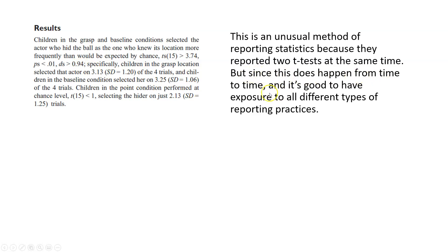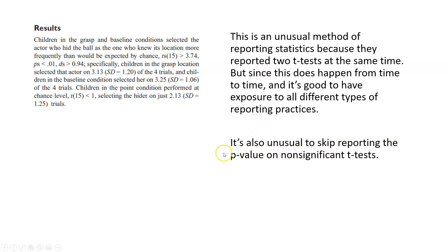This doesn't happen very often, but since it does happen from time to time in short reports, it's good to have exposure to all different types of reporting practices. It's also unusual to skip reporting the p-value on non-significant t-tests — ordinarily they would put a p-value like p > 0.05, or give the actual p-value. Sometimes this happens, and it's important for me to give you exposure to recognize that even though there's a standard way of reporting statistics, it's not always followed.